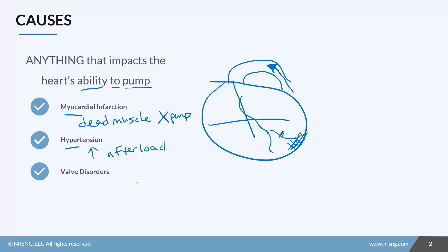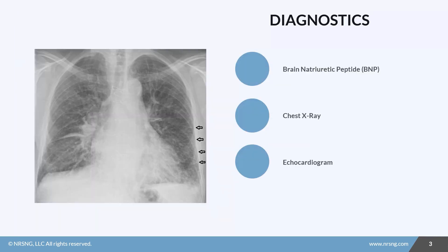With valve disorders, if the valve is having issues getting blood forward or it's regurgitating backwards — regurgitation or stenosis — the blood's not getting where it's supposed to go. You see congestion and backup of flow because the blood's not going forward. Anything that causes the heart to have issues pumping or affects the heart's ability to pump can effectively cause heart failure.